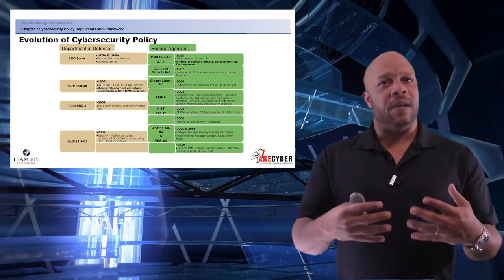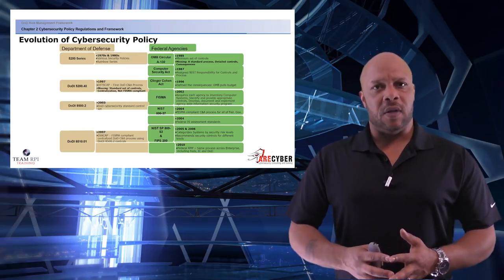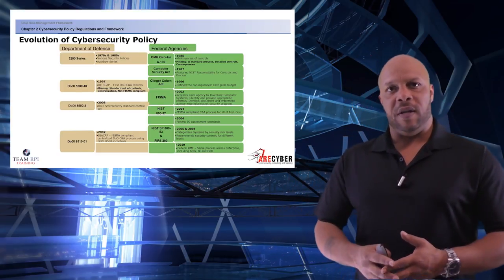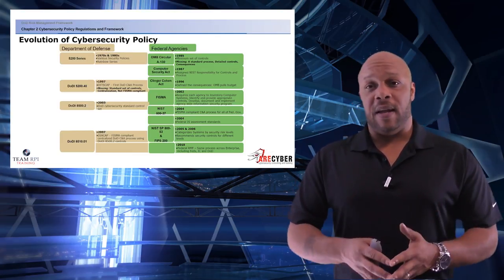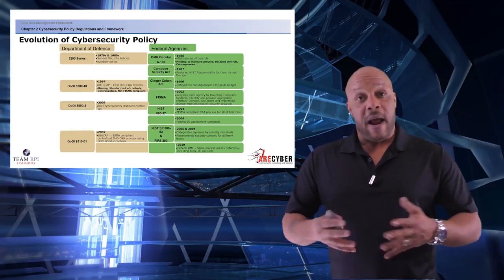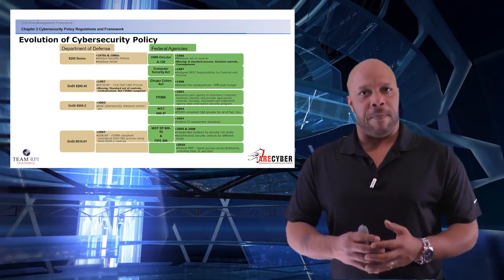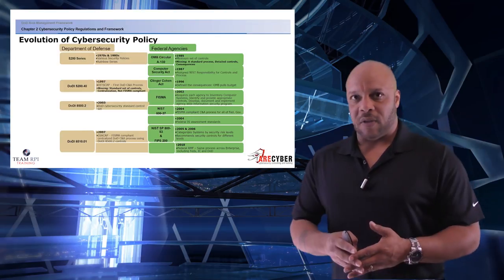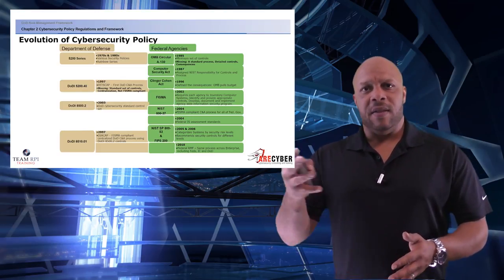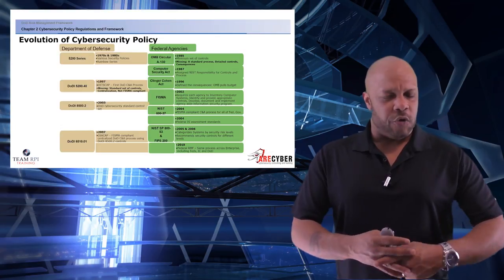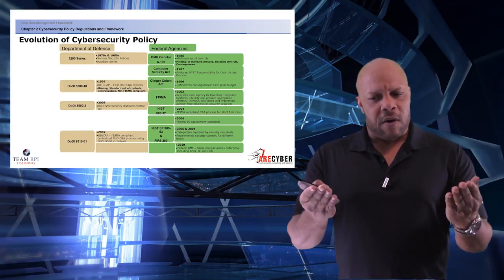Fast forward to 2002, and Congress introduces FISMA, the Federal Information Security Management Act. On the DoD side, they finally introduce a standard control set within the accreditation process. In 2004, we see the introduction of NIST 837, and in 2005-2006, the 853 and the accompanying FIPS-200. On the DoD side, we have the DoD 8510 — this was the original introduction of DICAP, an updated and better process than DITSCAP, but still not quite perfect. Looking at the two documents side by side, the 853 series and the 8500.02, which was the control set document for DICAP, there are striking similarities.